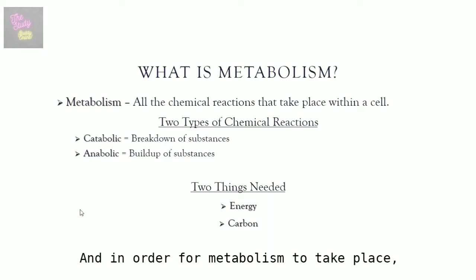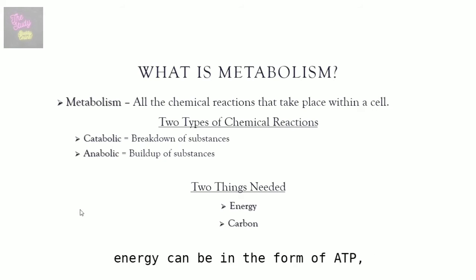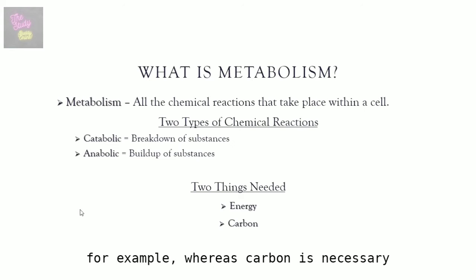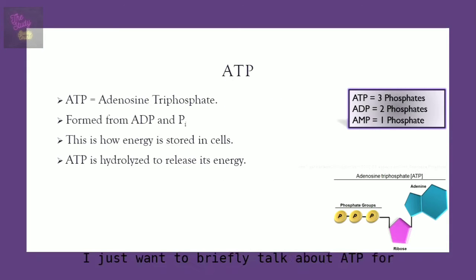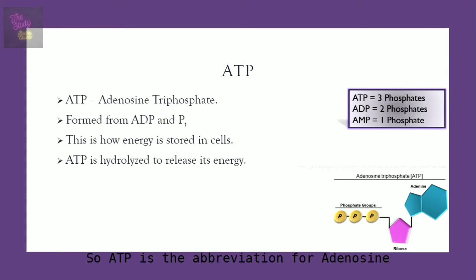In order for metabolism to take place, there are two things that are needed: energy and carbon. The energy can be in the form of ATP, for example, whereas carbon is necessary for building organic substances. I just want to briefly talk about ATP for anyone who might be unfamiliar with it.